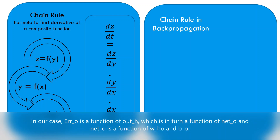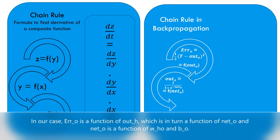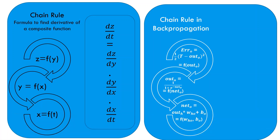In our case, error O is a function of outO, which is in turn a function of netO, and netO is a function of WHO and BO.